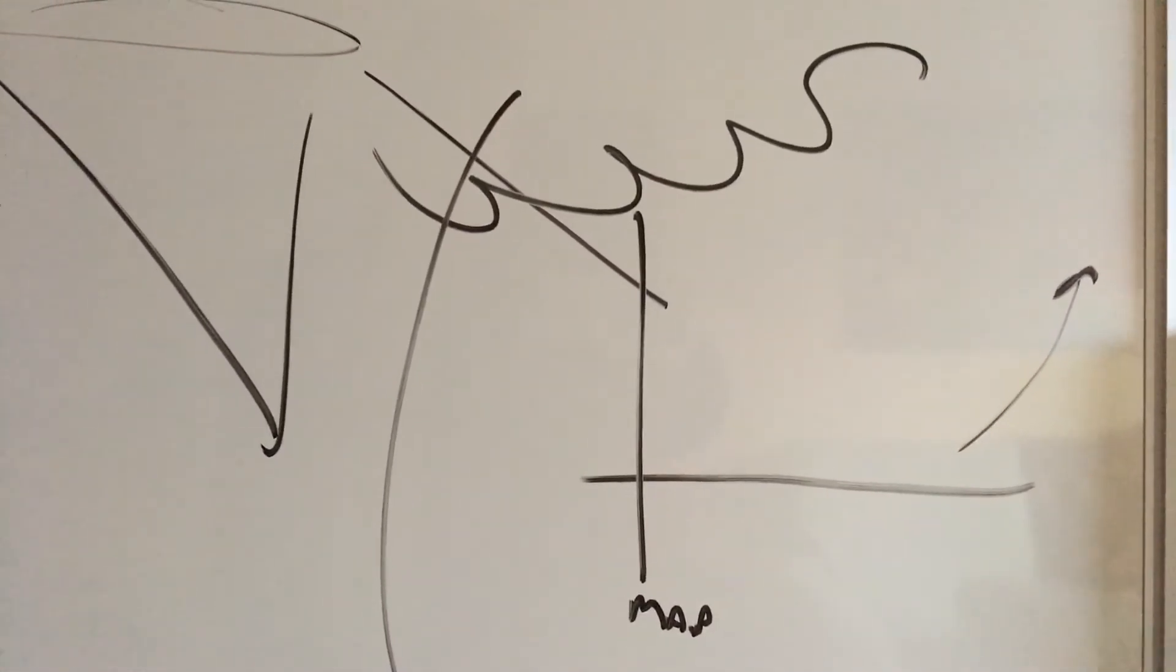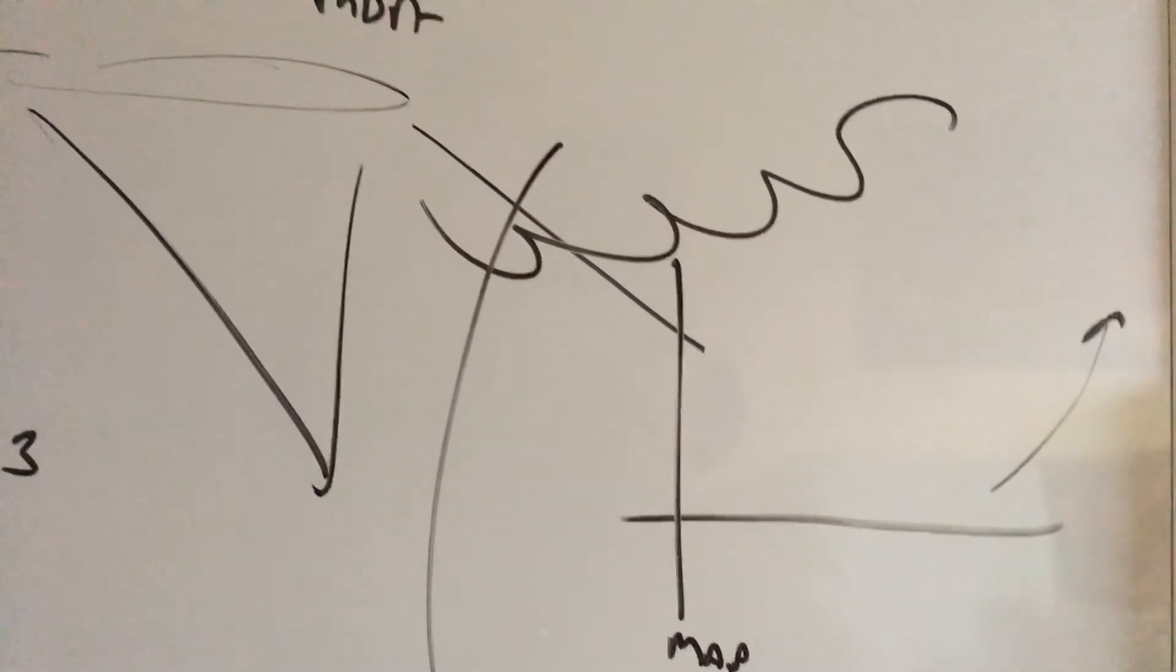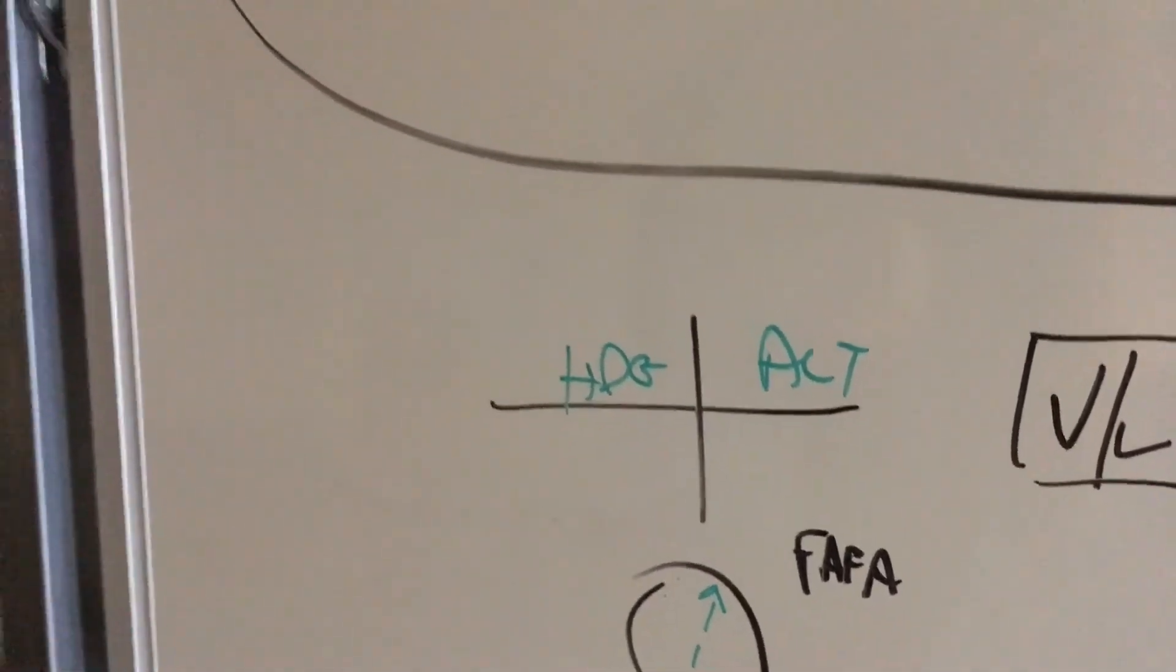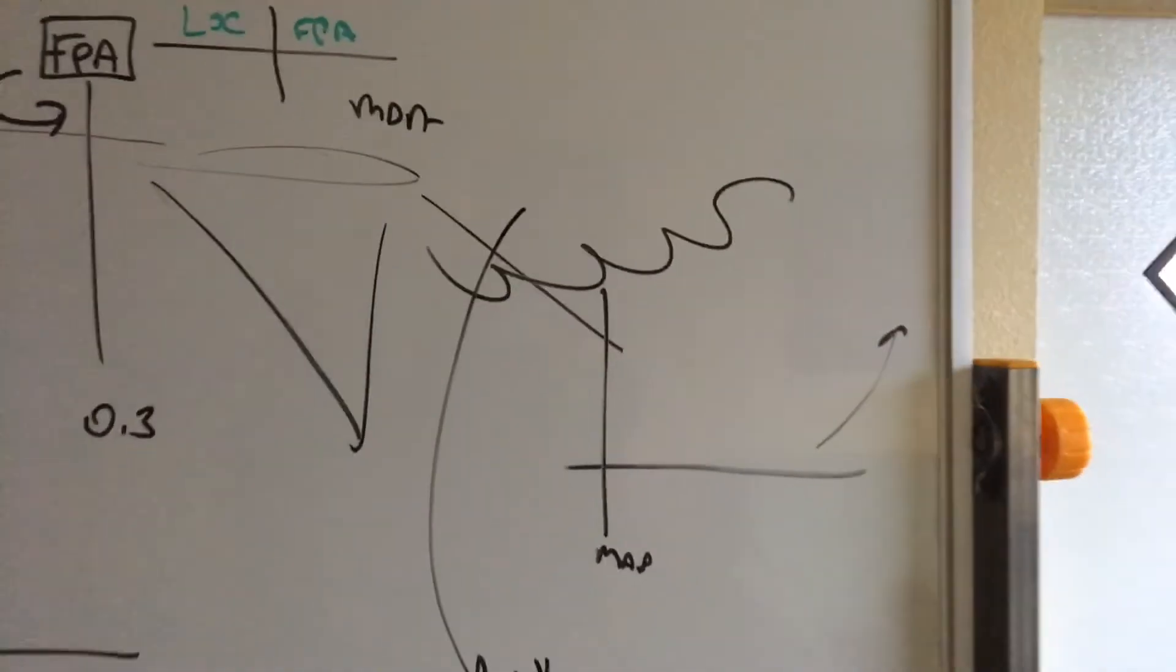Go around, flaps 2, positive rate, gear up. Take a look at your needles - you'll see that you have green needles, so we need to get to the FMS for our missed approach. So we select FMS and then NAV because we want to navigate off the FMS. At a thousand feet, flight level change to 10.